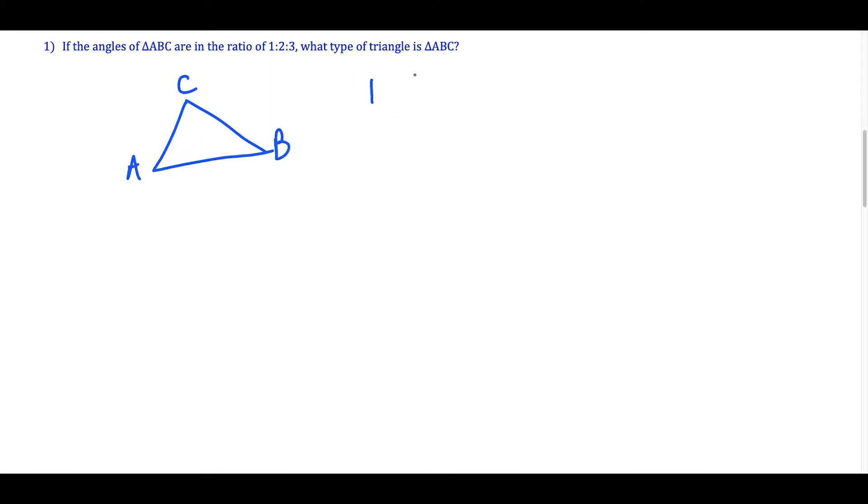From here, we have this ratio for the angles 1 to 2 to 3, and what we could do is just put an X next to all of them. Because whatever X is, let's say X is 10, then I would have 10, 20, 30, and those three numbers hold the ratio of 1 to 2 to 3.